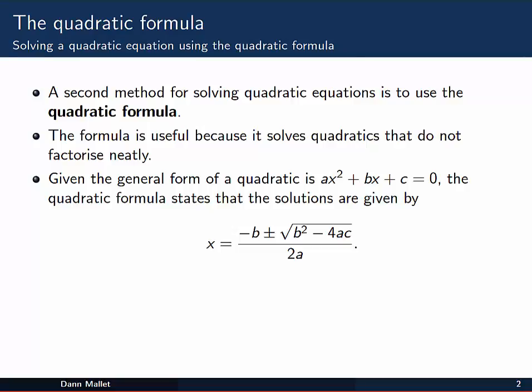Given the general form of a quadratic is ax² + bx + c = 0, the quadratic formula states that the solutions, if there are any, to that quadratic equation are given by this formula: x = -b, this symbol here means plus or minus, I'll explain that again in a minute, the square root of b² - 4ac, all divided by 2a.